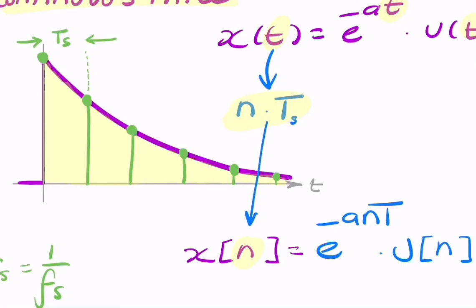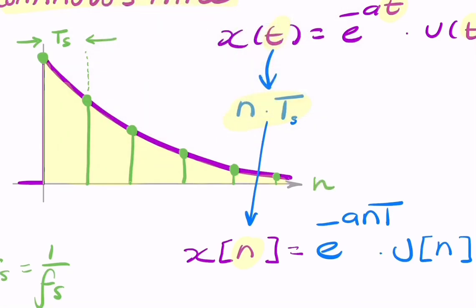But if we wanted to represent this, we would need to represent it as a function of n, and not as a function of t. So we'd need to replace the axis label t with something else — in this case, we're going to use n. And n isn't time; n is the coefficient of t, so it's an integer. It's an index that we use to represent time, but it isn't time.